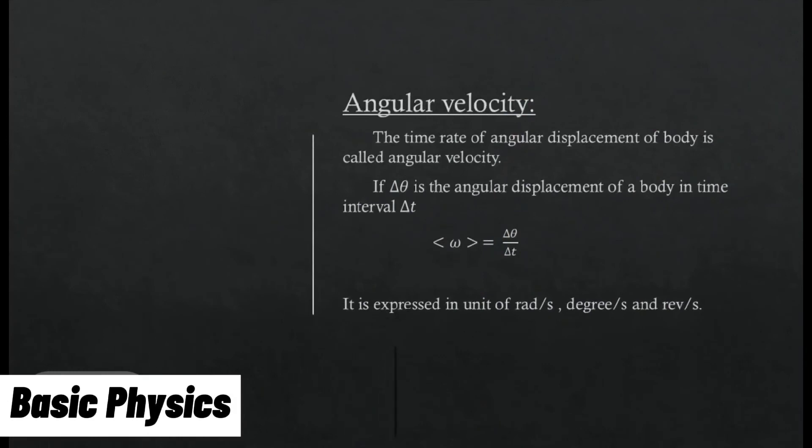Angular velocity: The time rate of change of angular displacement of body is called angular velocity. If Δθ is the angular displacement of body in time Δt, then angular velocity is ω = Δθ/Δt. Its unit is radian per second, degree per second, and revolution per second.